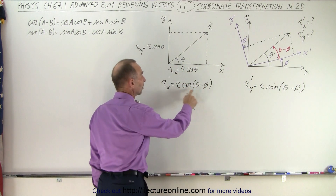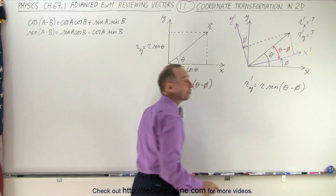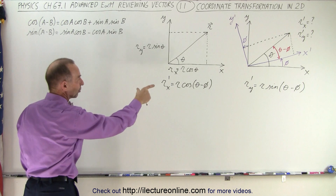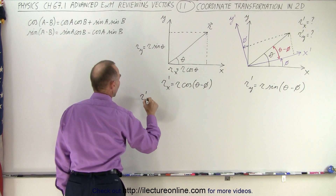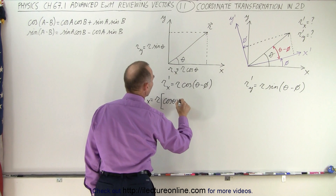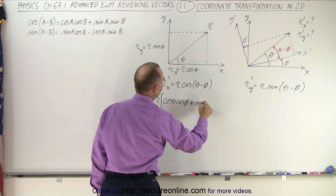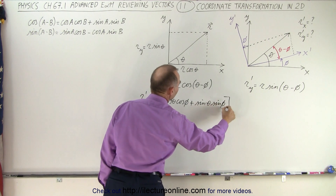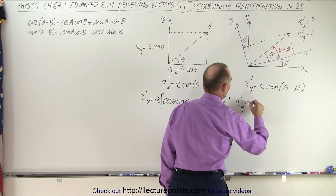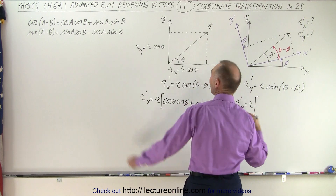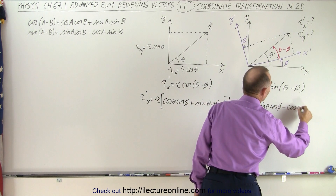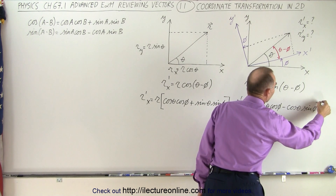So now we have the cosine of the difference of angles and the sine of the difference of angles, and you might have noticed that we have the two identities up here. The cosine of A minus B is cosine A cosine B plus sine A sine B, so we're going to write that over here. We have R prime X equal to R times cosine of theta minus phi, that's cosine of theta times cosine of phi, plus sine of theta times sine of phi. And the same over here, we can write R prime for the new Y axis, which is equal to R times the sine of theta minus phi — so we have sine of theta times cosine of phi, minus cosine of theta times sine of phi.